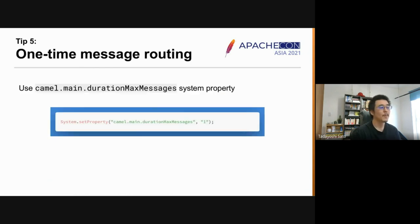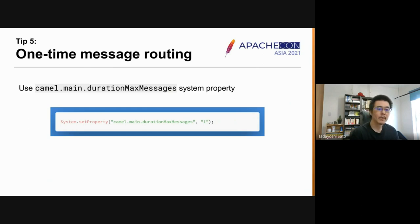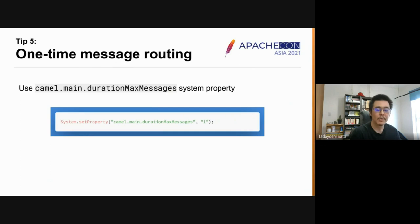Tip five — and I think this is the most important tip for integration scripting. Apache Camel by default is not designed to be used as a one-off script. Once you run a Camel runtime, it continuously waits for a message and processes it in a route until it's externally shut down.